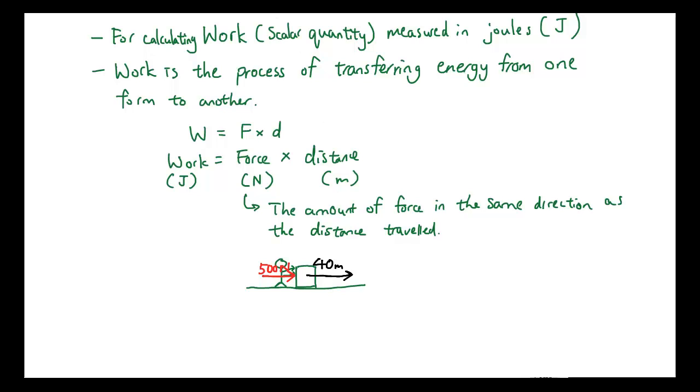As a result of this person pushing against the box, the box travels in the same direction as the force 40 meters. So what's happened is, this person has done the amount of work equivalent to work equals 500 newtons times 40 meters equals 20000 joules.